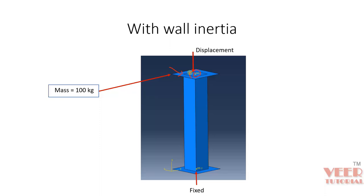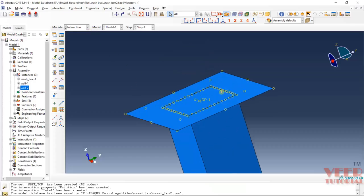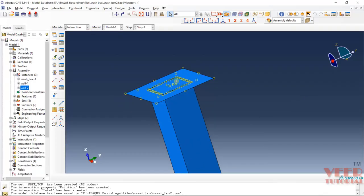It is only applied to a point. If you go to the boundary condition, you can see the bottom rigid wall is fixed. For the top, we are going to provide a downward displacement. Let's go to Abaqus to apply the mass. I will zoom in on to the top plate.